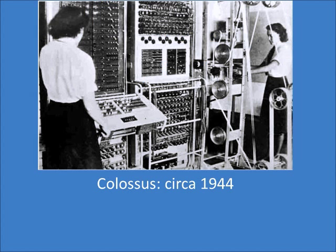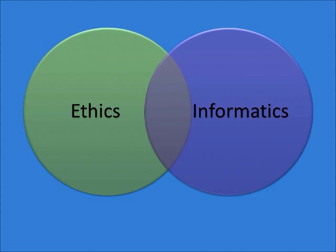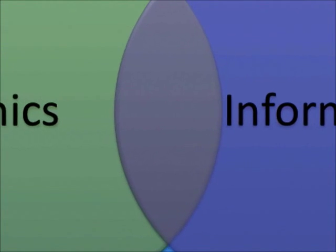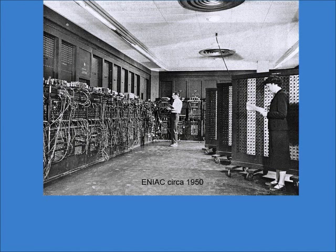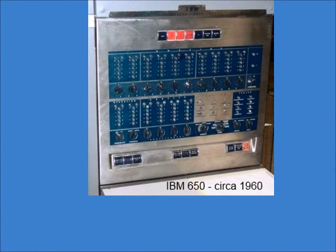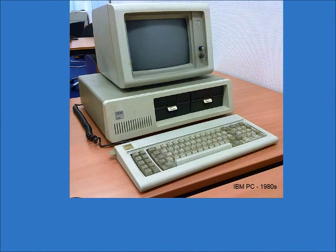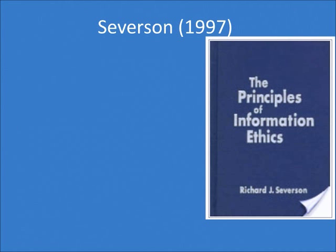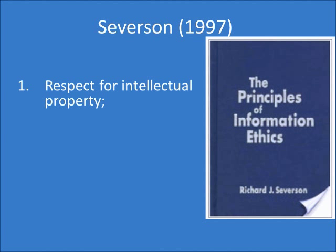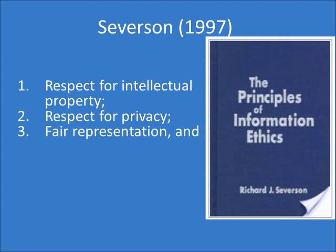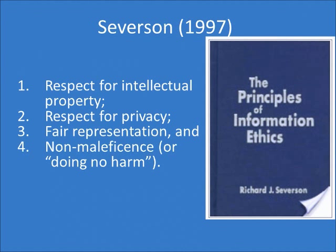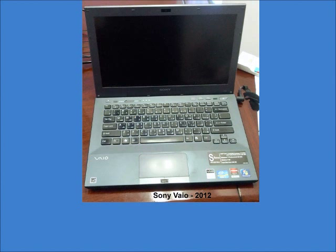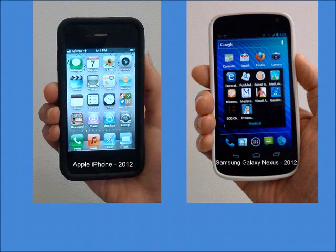As one would expect, because informatics is a relatively new field of study, the area formed by informatics and ethics has a shorter history. Issues of ethics were raised as computers developed in the latter half of the 20th century. In 1997, Severson introduced four principles of information ethics: respect for intellectual property, respect for privacy, fair representation, and non-maleficence, or doing no harm.